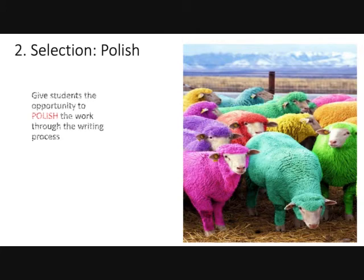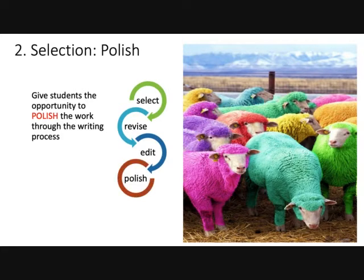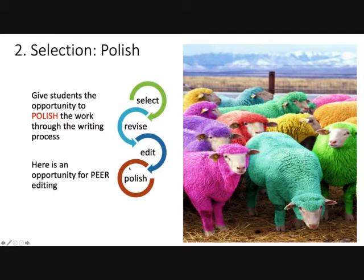Let's say they've now chosen those three pieces — you need to give the students the opportunity to polish the work, and this happens through the writing process. They're going to take those three pieces and read through them again carefully, and even get a friend or two to read through the pieces and give feedback about areas that could be improved. They're going to edit for things like grammar, spelling, punctuation, and structure. Once they've revised and edited, then they can polish and submit. This is also a really great opportunity for peer editing.